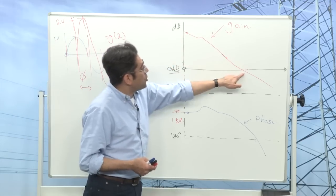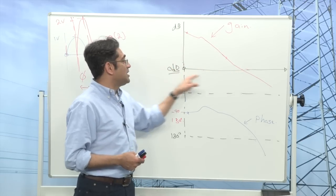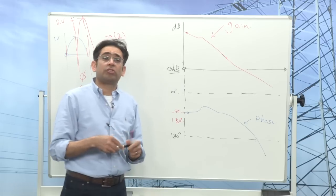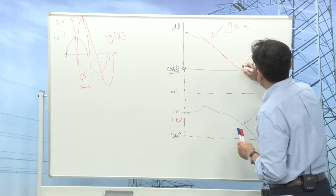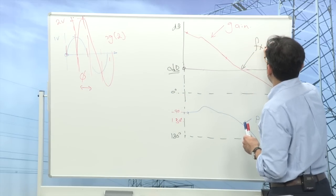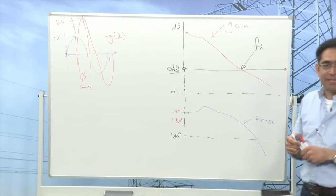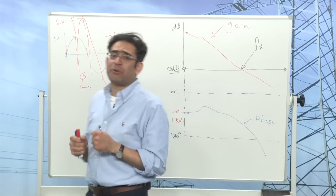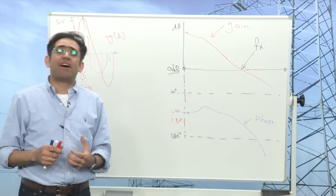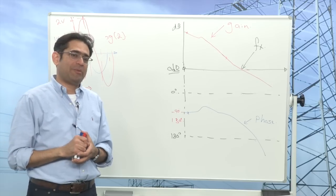My gain is crossing over the 0 dB axis and that is called the crossover frequency. So this point here is called the crossover frequency. The crossover frequency is a measure of how fast the transient response of the power supply is going to be.